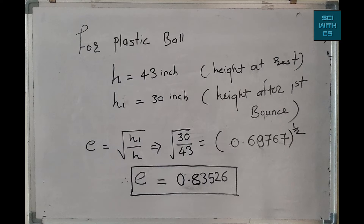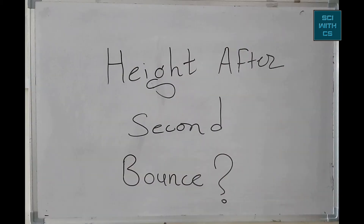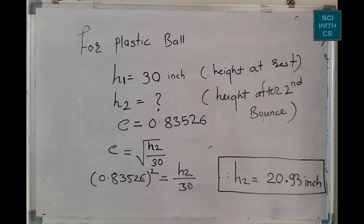From this we got the values: h equals 43 and h1 equals 30. Solving the equation gives us the value of the coefficient of restitution e. For the plastic green ball, we then calculate the second bounce height h2. Doing the math gives us the theoretical height calculated by the coefficient of restitution formula.